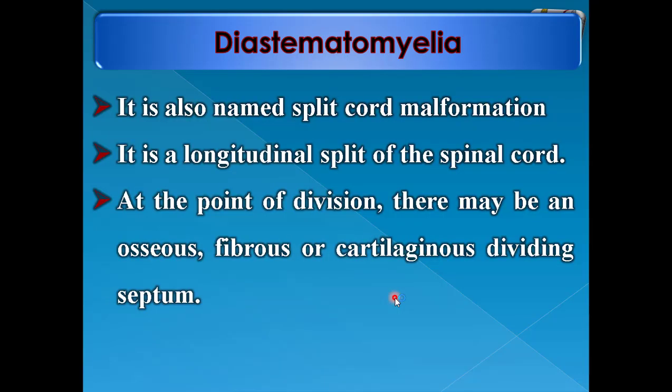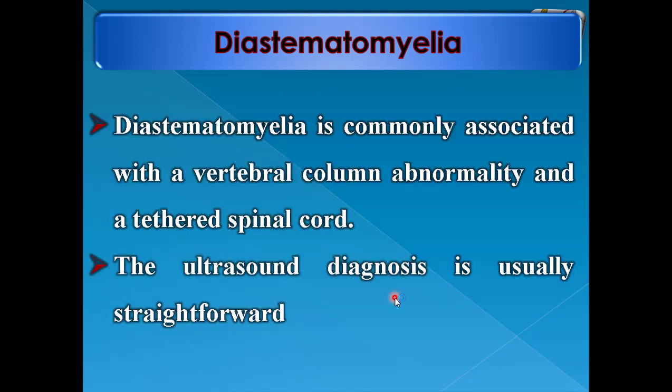Diastematomyelia, also named split cord malformation, is an original split of the spinal cord. At the point of division there may be an osseous, fibrous, or cartilaginous dividing septum. Diastematomyelia is commonly associated with a vertebral column abnormality and a tethered spinal cord. The ultrasound diagnosis is usually straightforward.